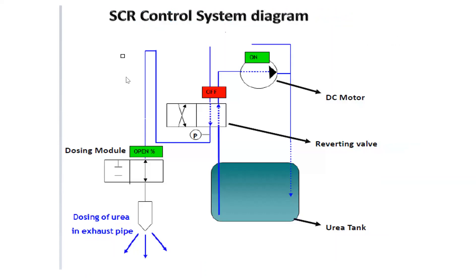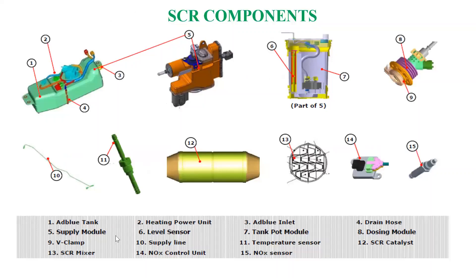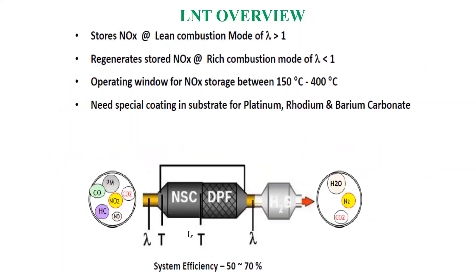These are the different components involved in SCR. You have the urea tank, the pump motor, and the dosing injector which injects ammonia. This is completely electronically controlled. The sub-components of SCR include the output tank, sensors, hoses, dosing module, clamp, supply line which supplies urea to the injector, and the SCR catalyst — vanadium oxide and metallic zeolite.